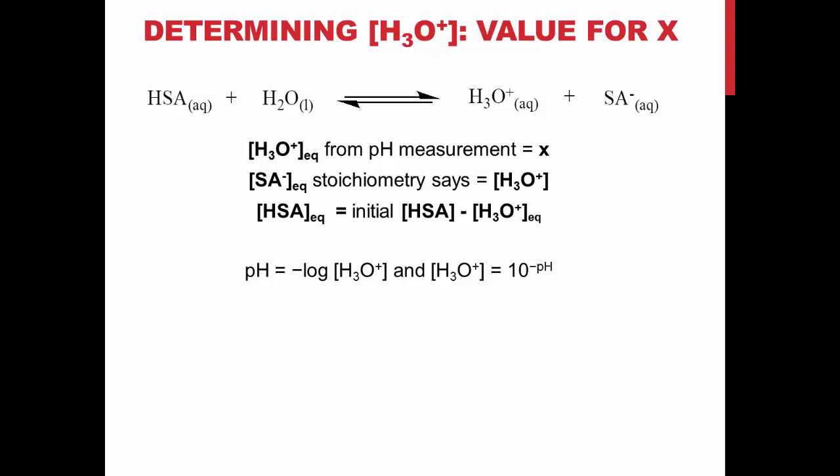This also gives you the concentration of SA-, and it is equal to the concentration of H3O+. The concentration of HSA can easily be found by subtracting the concentration of H3O+ from the initial HSA concentration.